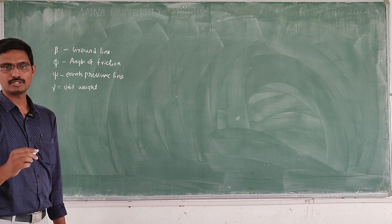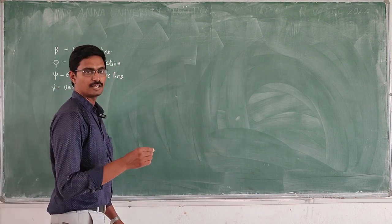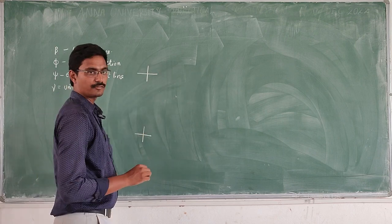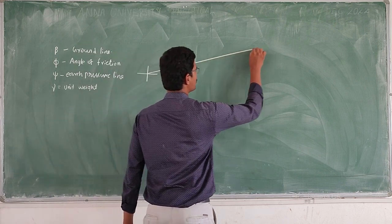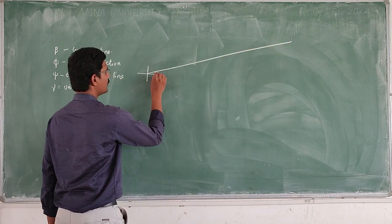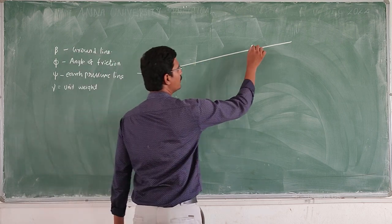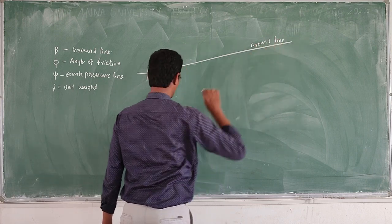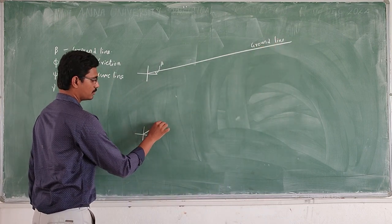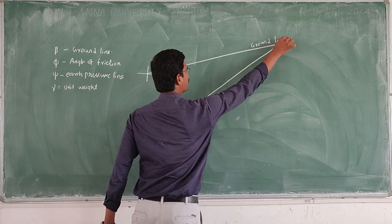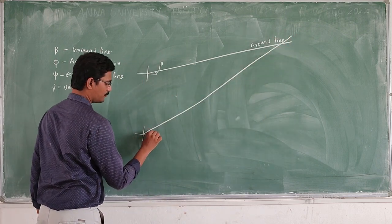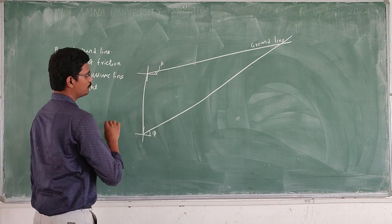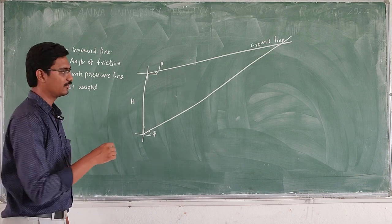The procedure to find out the earth pressure: first, we have to draw the ground line and the coefficient of earth pressure line. This angle is beta, that is the ground line. Then we can draw the phi line — this is the phi line with the horizontal. Now we can connect both, and this is the height of the retaining wall.